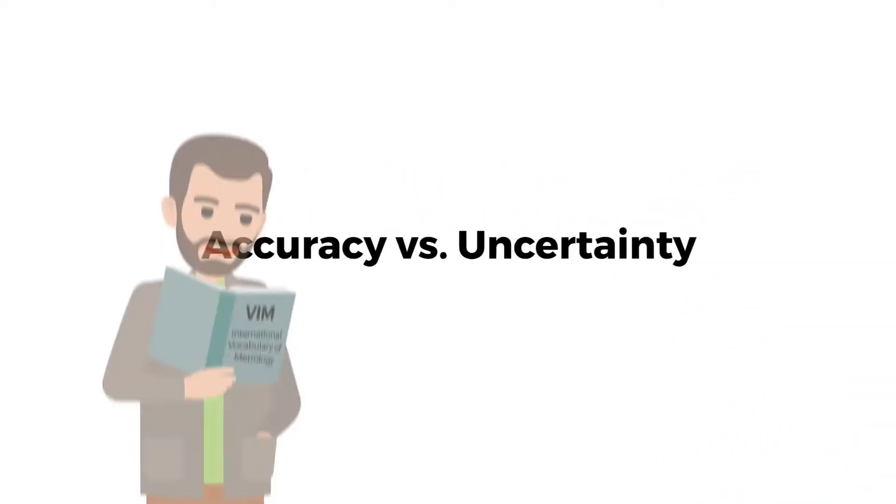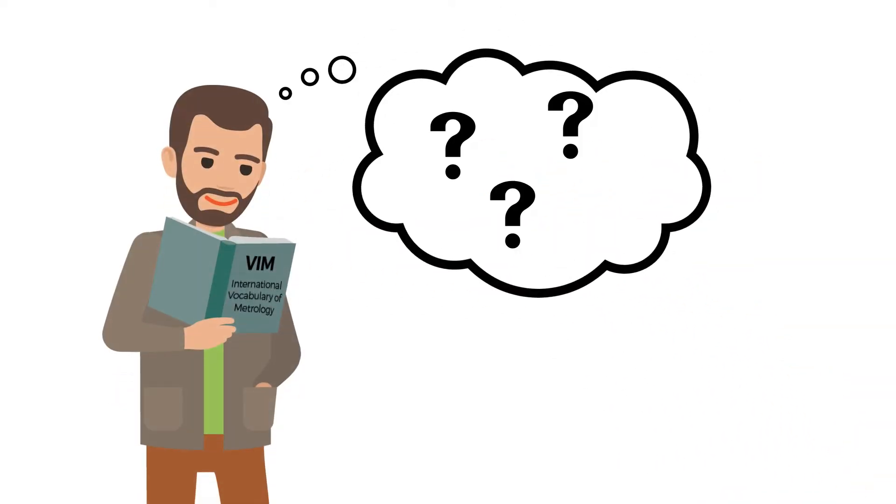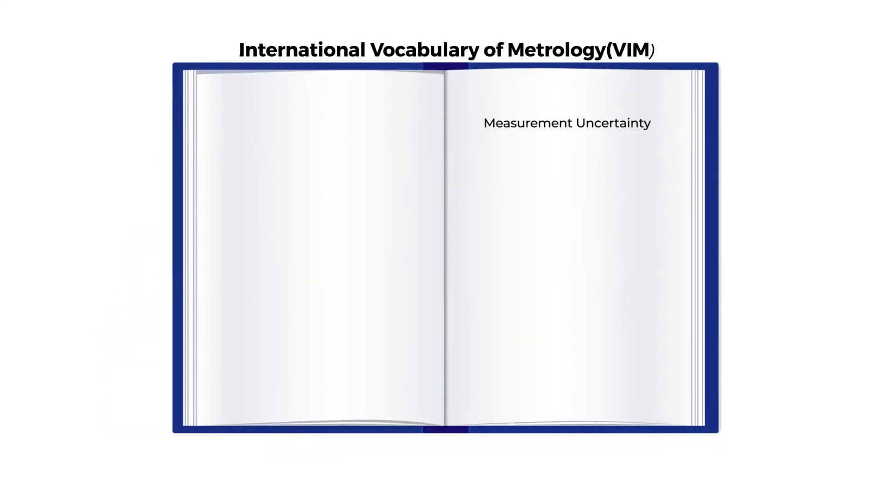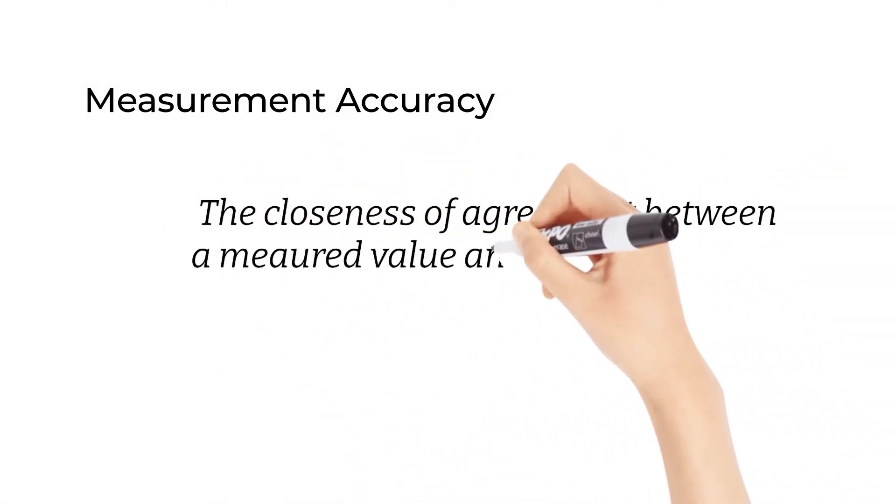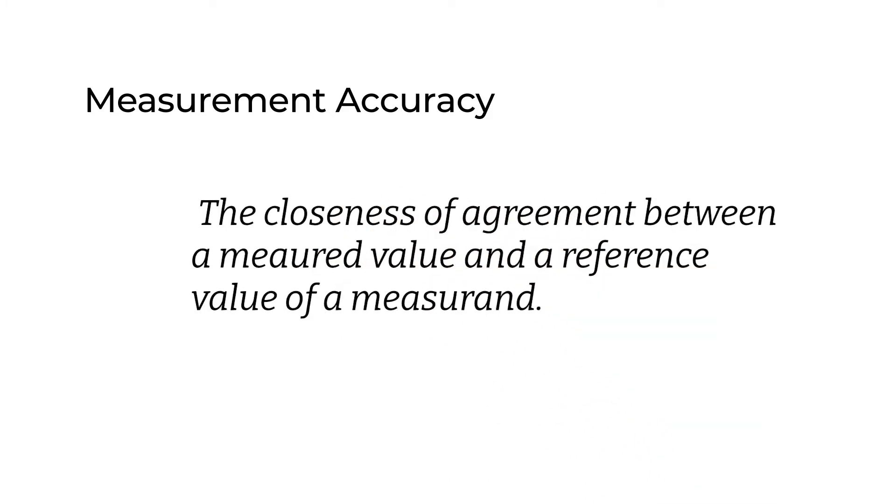Accuracy versus uncertainty. The definitions of measurement accuracy and measurement uncertainty are quite different in the international vocabulary of metrology. Measurement accuracy is the closeness of agreement between a measured value and a reference value of a measurand.